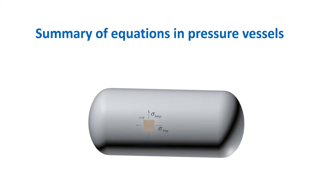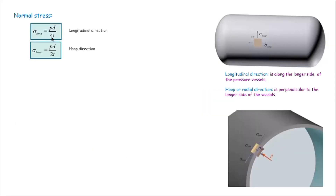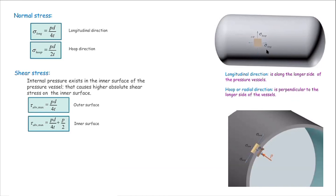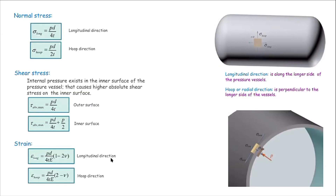Now let me summarize the equations for cylindrical pressure vessels. There are two types of normal stresses: the longitudinal stress along the longer direction of the element, with magnitude Pd divided by 4t — the same as for spheres — and the hoop stress, which is twice as large at Pd divided by 2t. There is no shear stress, but after rotating we can determine out-of-plane maximum shear stresses. The maximum absolute shear stress on the outer surface is Pd divided by 4t, and for the inner surface an additional term of half the internal pressure is added. Strains in the longitudinal and hoop directions are also shown. We have now developed all equations needed for determining stresses and strains in cylindrical and spherical pressure vessels.